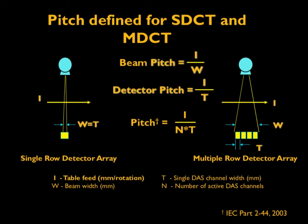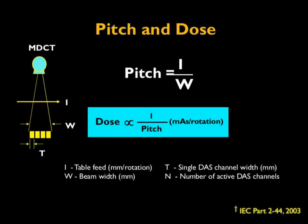Shown on the left side of this slide is the definition of pitch applicable to a single-row detector system, which is hardly available these days. On the right is the definition of pitch as applicable to multi-detector CT. According to current international standards, pitch is defined as the ratio of the table travel per rotation — called the table feed — divided by the beam width W, where W is the product of individual channel width multiplied by the number of channels N sub t.